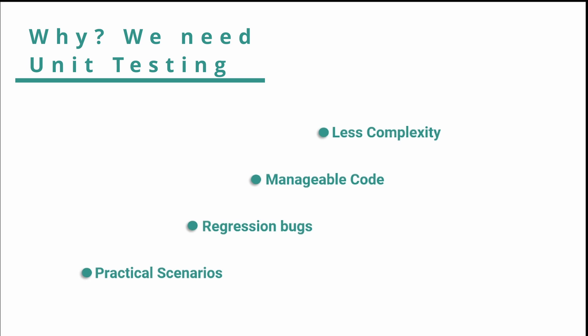Unit testing, especially when automated, helps developers identify breaking changes and thereby reducing regression bugs. A good unit test will help you achieve a manageable code with less complexity and high modularity.